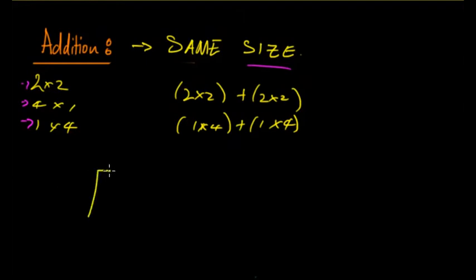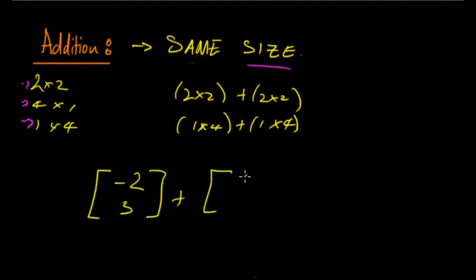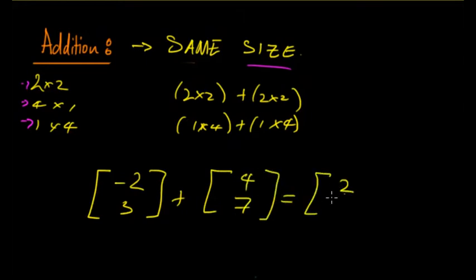A quick addition example: [-2, 3] plus [4, 7] gives us 2 (since 4 minus 2 = 2) and 10 (since 3 plus 7 = 10), resulting in the matrix [2, 10].